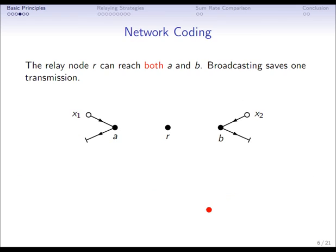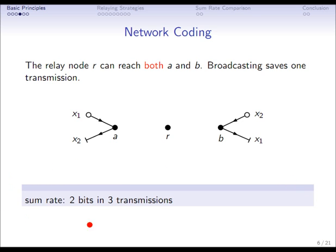Can we do better? Yes, we can do better because the relay node can reach both users at the same time, so we might use broadcasting which can save one transmission. The way it is done is with network coding. The first user transmits to the relay and the second user transmits to the relay. The relay then broadcasts a combination of the bits. In this case, it just computes the parity check and then broadcasts this parity check. Now both users are aware of this parity check, and then because they have side information, they can extract the bit or the message of the other user. With this technique, we just saved one transmission. So we can now exchange two bits in three transmissions or three time slots.